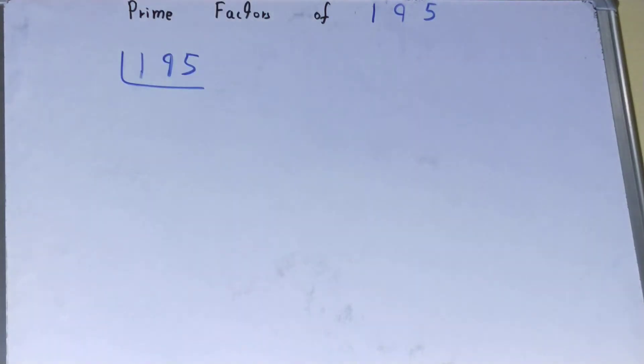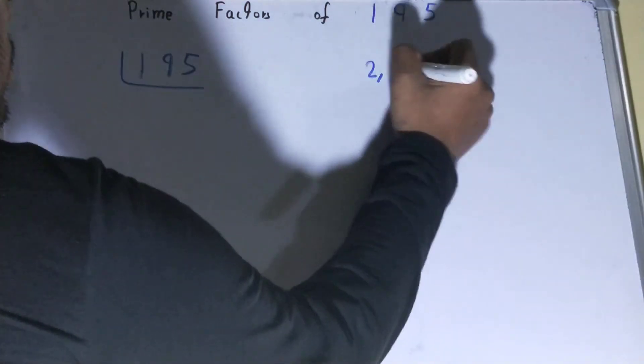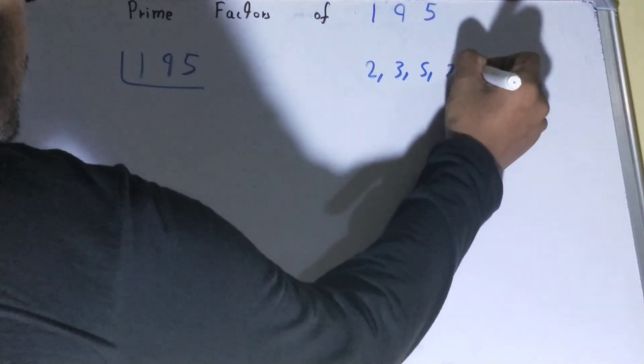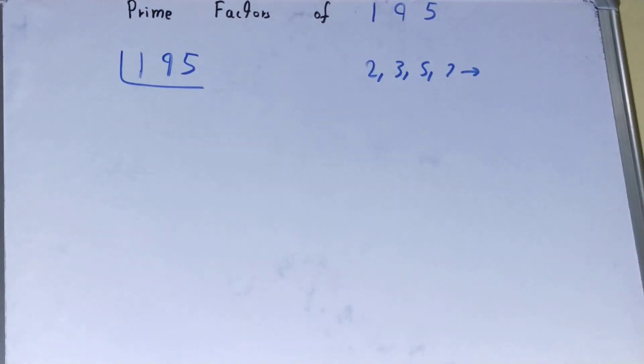Prime numbers are numbers that are divisible by one and the number itself, like two, three, five, seven, and so on. What we'll do is start with the lowest prime number that we have, that is two.